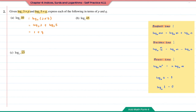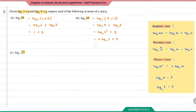Question B: 45 can be written as 9 times 5. Using the product law, this is log base 2 of 9 plus log base 2 of 5. Write 9 as 3 to the power of 2. Log base 2 of 5 is q, so we replace it straight away. Using the power law, move the 2 to the front: 2 times log base 2 of 3 plus q. Since log base 2 of 3 equals p, the answer is 2p plus q.